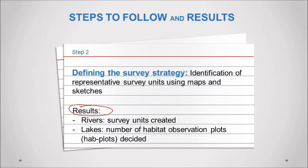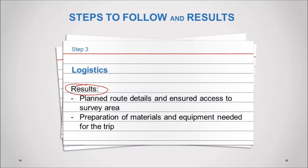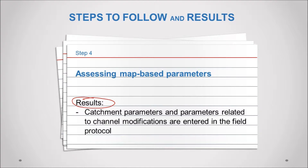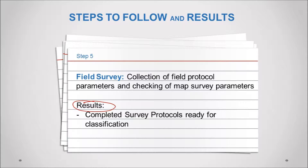The second step is to define the survey strategy. For rivers, this means establishing relevant survey units. For lakes, this involves deciding on the number of habitat observation plots, or HAB plots. The next steps are to prepare logistically for the field trip and to gather needed materials and equipment. Another step that takes place prior to the field survey is assessment of map-based parameters. The results obtained here can be checked later while in the field.